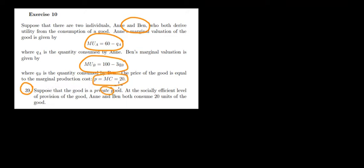Now suppose the good is private. At the socially efficient level, Anne and Ben both consume 20 units of the good. When we're speaking about a private good, what we care about is the individual benefit to every person.